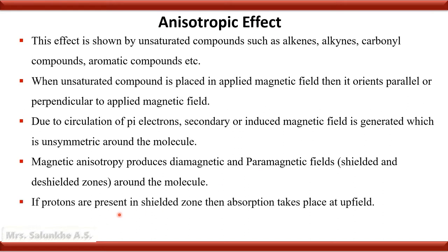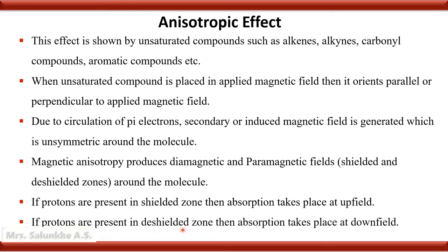If protons are present in the shielded zone, then absorption takes place at higher field. Such protons require a higher magnetic field strength to come under resonance, and their chemical shift values are less. If protons are present in the deshielded zone, then absorption takes place at lower field — such protons require less magnetic field strength to come under resonance, and their chemical shift values are higher.